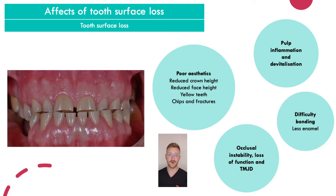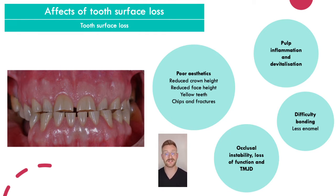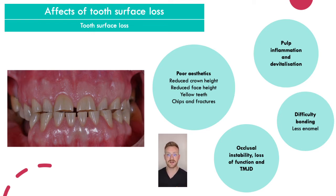Finally — more of an issue for us than the patient — is that when you lose enamel it's harder to bond to the tooth. Reduced clinical crown height means less tooth to bond to. Restorative materials are designed to bond well to enamel, so with less enamel you won't get as effective a bond and the restorations will have less longevity.